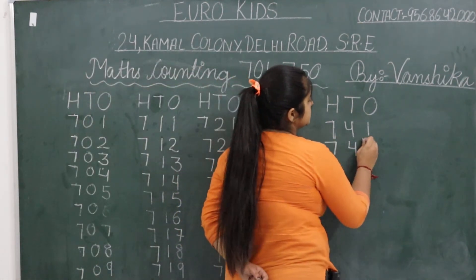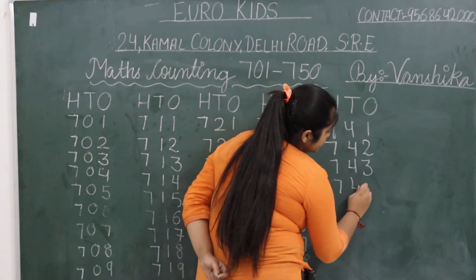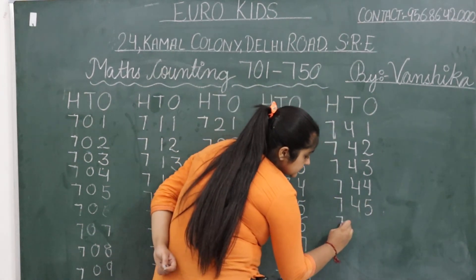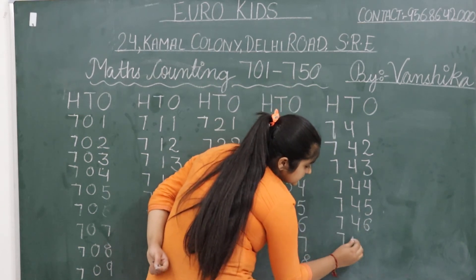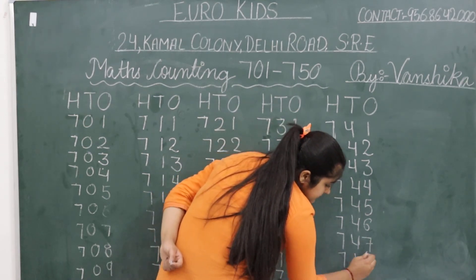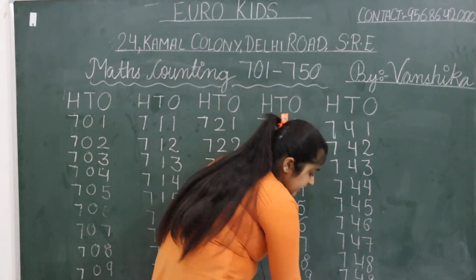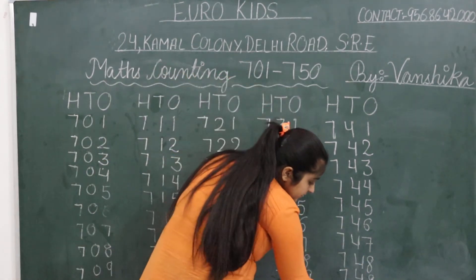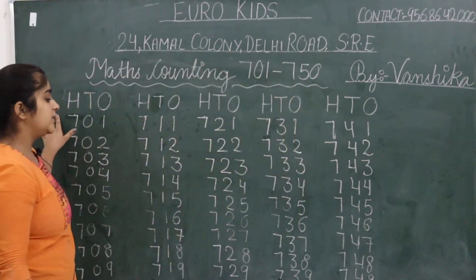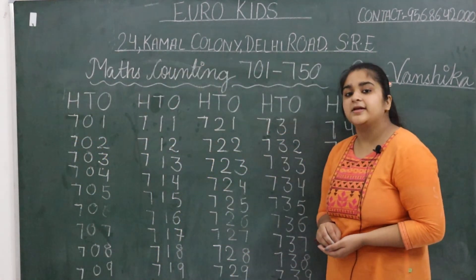Now what comes next? 742, 743, 744, 745, 746, 747, 748, 749. And what comes last, children? 7 stays as it is, and after 49 comes 50. Understood? Today, children, you have to do counting from 701 to 750. Write full block letters touching the line, and write in nice handwriting, okay?